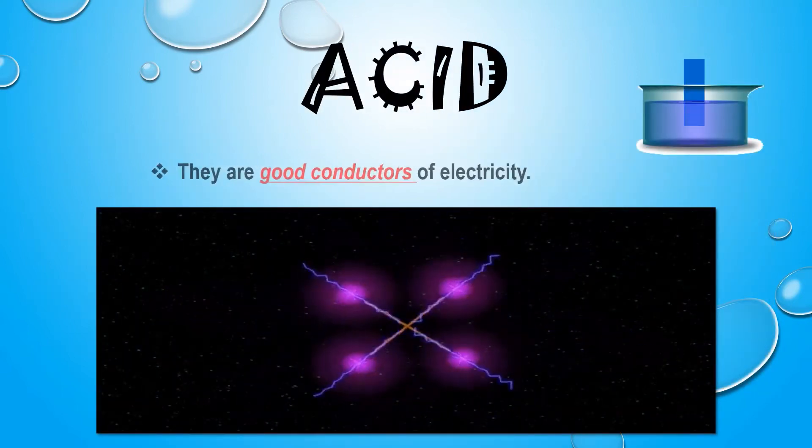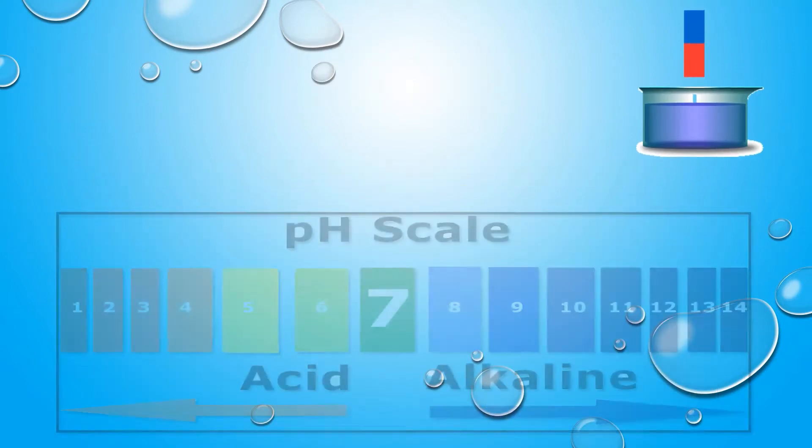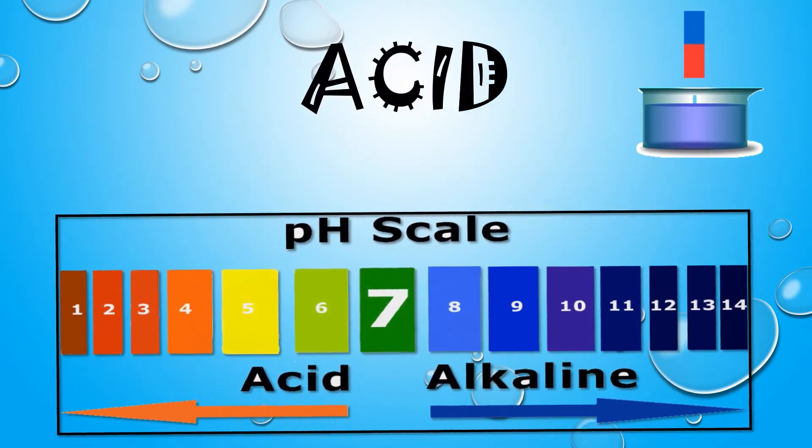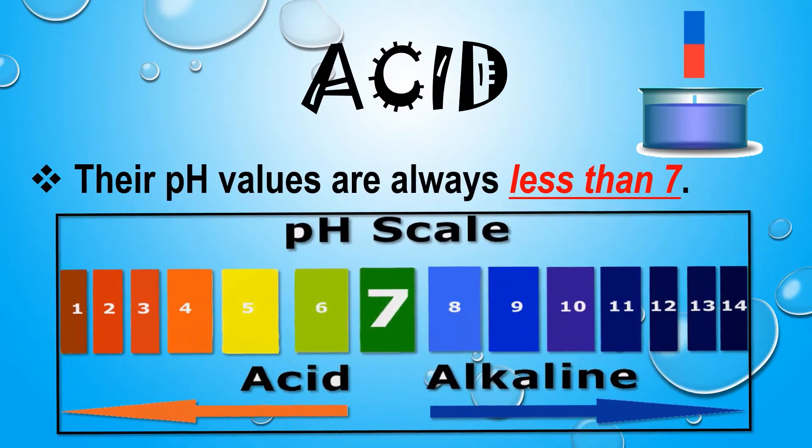Second, they are good conductors of electricity. The pH level of an acidic substance is less than 7.